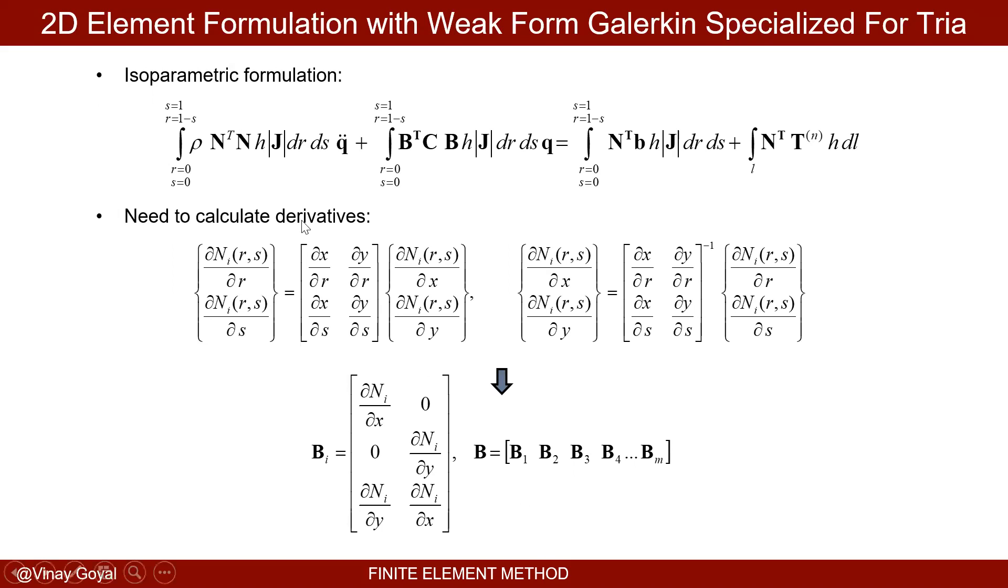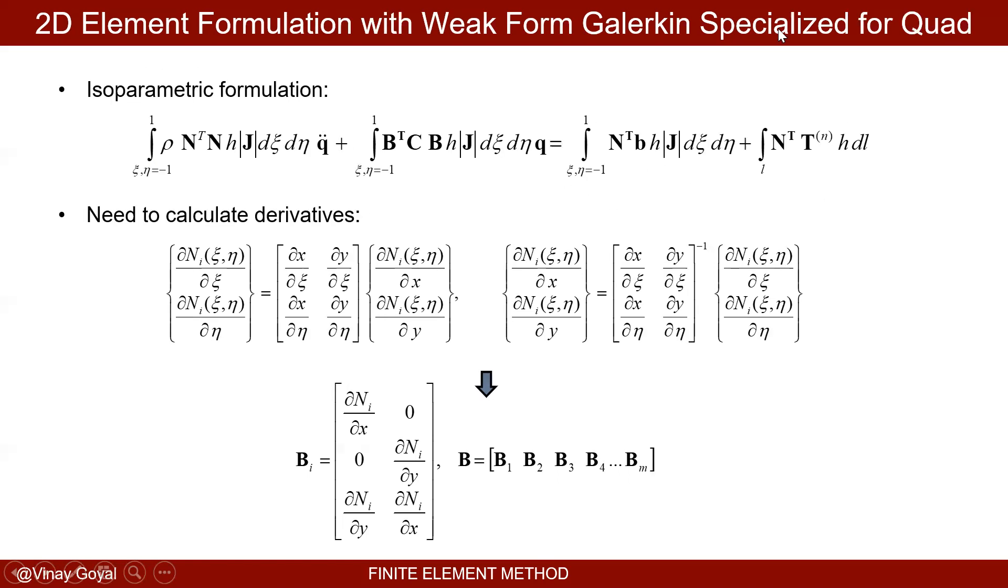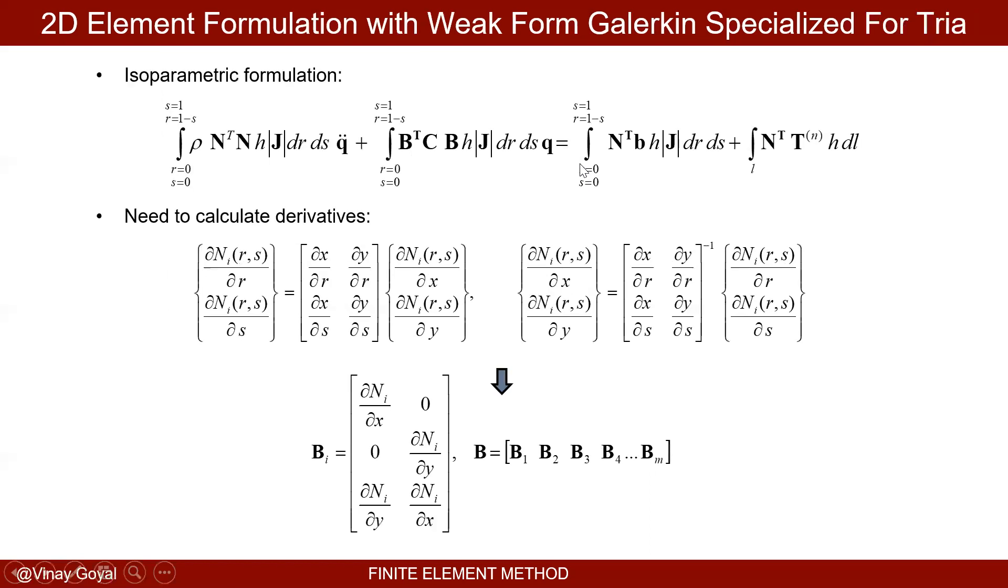For triangular element you have to be more careful. The integrals go from r equals zero to one minus s and integral from s equals zero to s equals one. That's the only difference between quadrilateral. This quadrilateral element we turn the quadrilateral into square and that's why we have a double integral from minus one to one. Here is a triangular element, right triangle. So you have to do the integral a little bit differently. Procedure is the same. Now we're using the r n s coordinate system but the idea is the same at the end of the day.